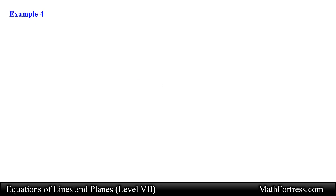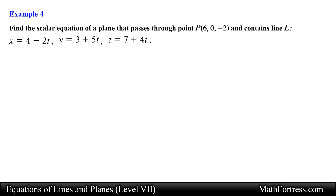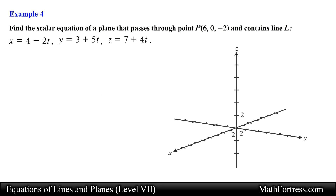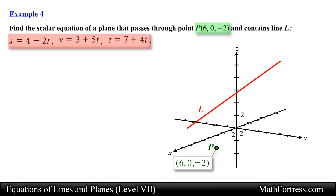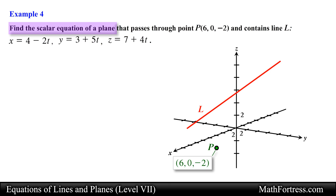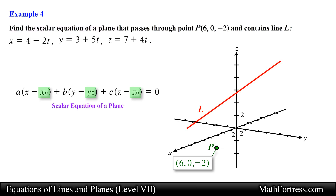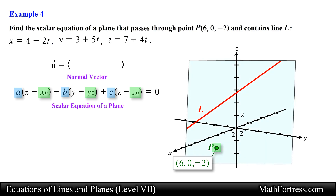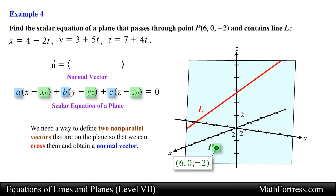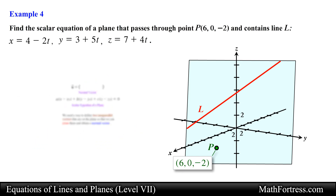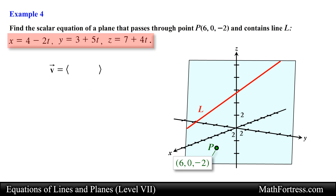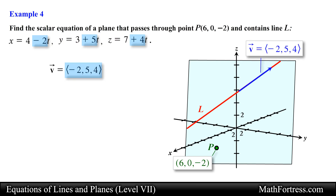Let's go over the final example. Find the scalar equation of a plane that passes through point P and contains line L. We are given the coordinates of a point and parametric equations of a line, and we need a point on the plane and a normal vector. We need two non-parallel vectors on the plane so we can cross them to obtain a normal vector, just like in the previous example. We can define one of these vectors by inspection using the parametric equations of the line — since the line is on the plane, the direction vector of the line will also be on the plane. Let's denote it as vector V.